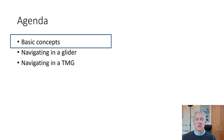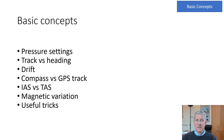So let's start with the basic concepts. We're going to talk about pressure settings, and revisit some things you should have covered in your bronze exams: track versus heading, drift, compass versus GPS track, IAS and TAS, magnetic variation, and a few useful tricks. You ought to know this stuff, but it's just a quick reminder.